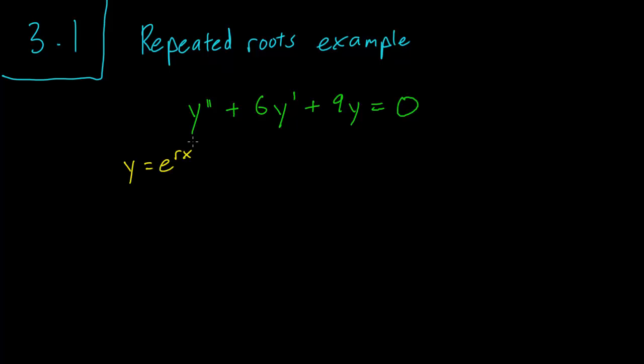So what happens is that we have... Let's do it slowly. We have y prime equals r e to the rx. y double prime equals r squared e to the rx.